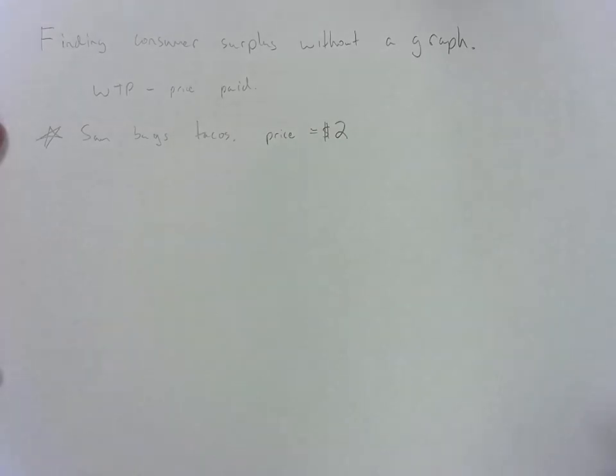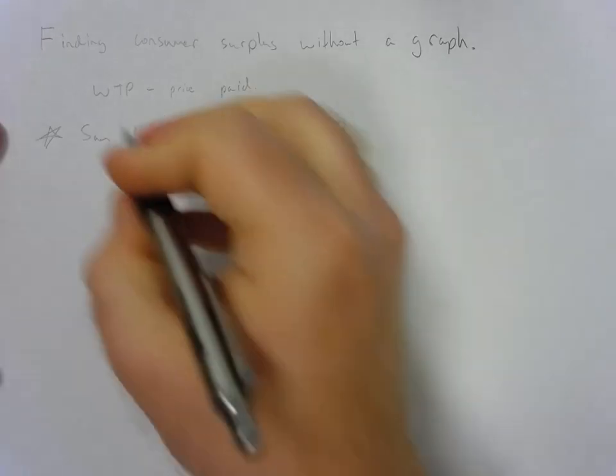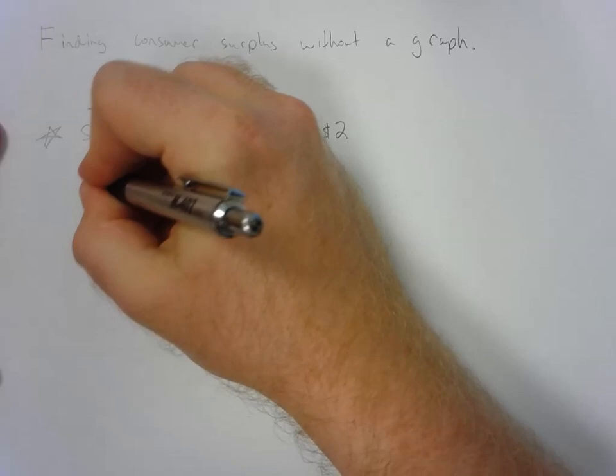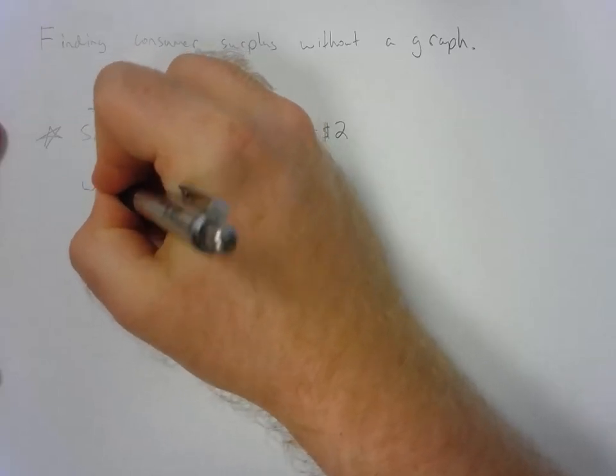In order to answer this consumer surplus question, we have to figure out what the WTP — or the willingness to pay — is. So what is Sam willing to pay for the tacos?